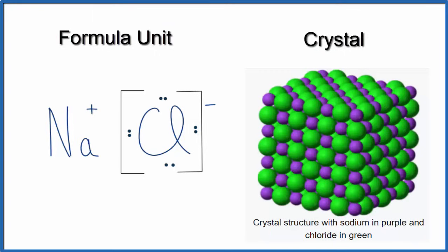Understand that what we drew, the Lewis structure for NaCl, is actually what's called a formula unit. When you have a crystal, it's made up of a bunch of these formula units in a regularly repeating pattern.